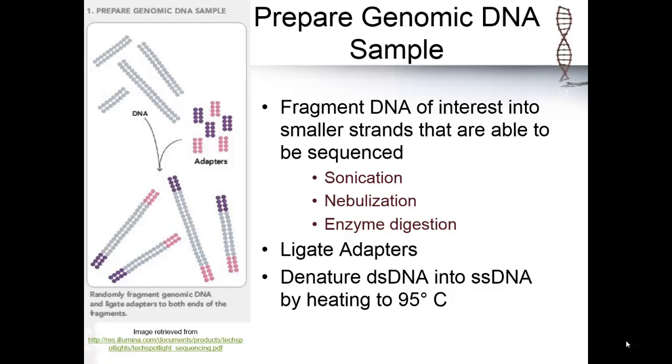The first step is to prepare the genomic DNA sample or library. These basic first steps are found in all sequencing methods because a strand cannot be sequenced if it is too large or if it is already double-stranded.